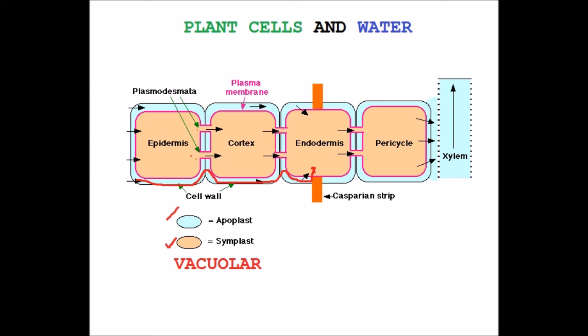The plasmodesmata are gaps in the cell walls that contain a thin strand of cytoplasm. Therefore, the cytoplasm of adjacent cells is linked. Once inside the cytoplasm, water can move through the continuous cytoplasm from cell to cell into the xylem.